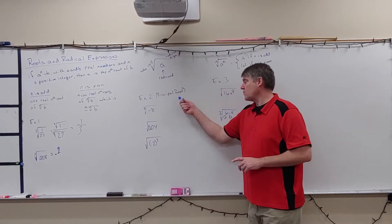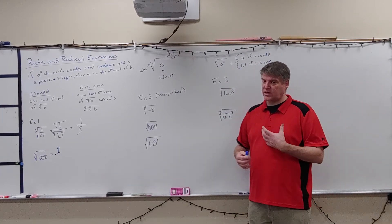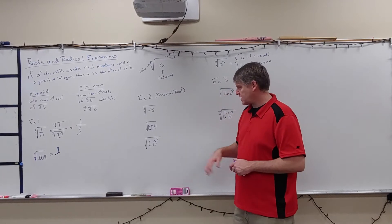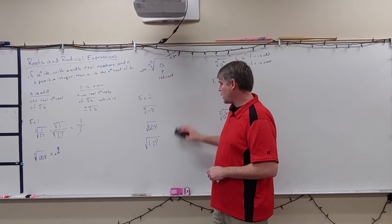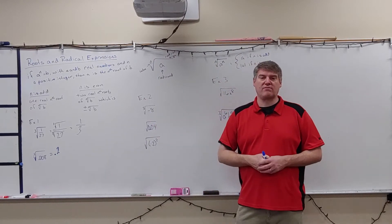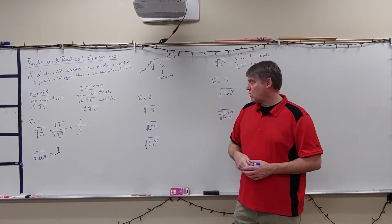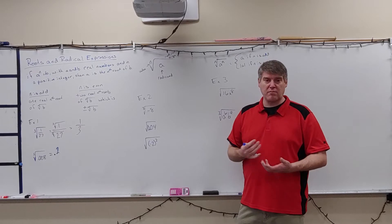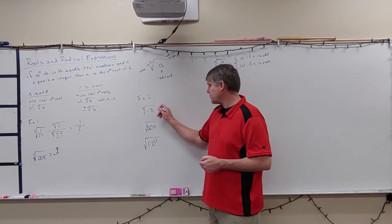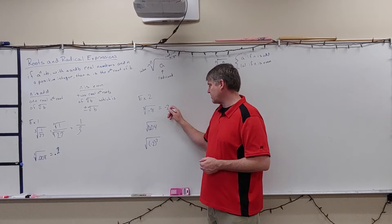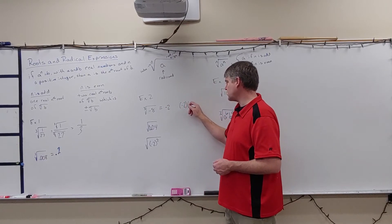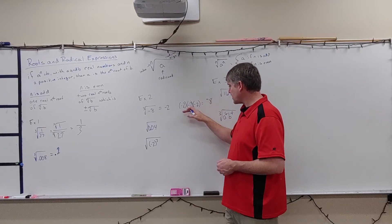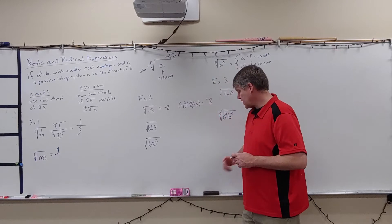In example two, we look at some principal roots. The cube root of negative eight is negative two, because negative two times negative two times negative two equals negative eight.